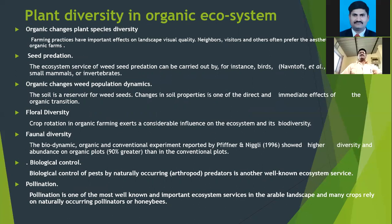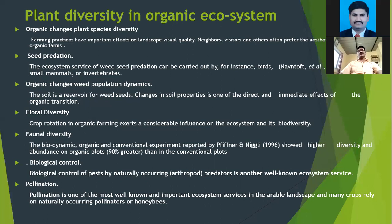Plant diversity in the organic ecosystem: organic farming changes plant species diversity. Farming practices have important effects on the landscape's visual quality — neighbors, visitors, and others often prefer the aesthetic values of organic farms. Seed predation ecosystem services can be carried out by birds, small mammals, or invertebrates. The soil is a reservoir for weed seeds; changes in soil properties are one of the direct effects of organic transitions. Crop rotation in organic farming exerts a considerable influence on the ecosystem and its biodiversity.